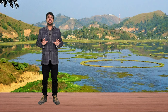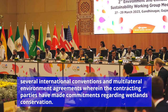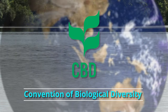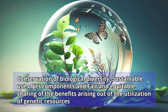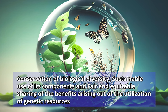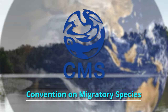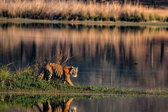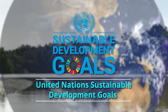Apart from the Ramsar Convention, there are several other international conventions and multilateral environment agreements wherein contracting parties have made commitments regarding wetlands conservation. These include the Convention on Biological Diversity, which aims at conservation of biological diversity, sustainable use of its components, and fair sharing of benefits from genetic resources. The second is the Convention on Migratory Species, which provides a global platform for conservation of terrestrial, aquatic and avian migratory animals and their habitats. The third is the United Nations Sustainable Development Goals.